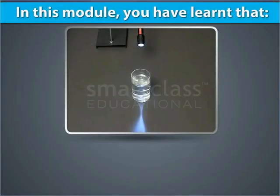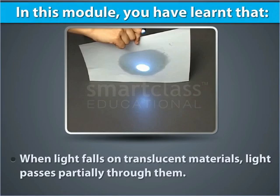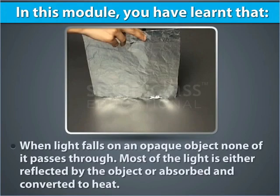In this module, you have learnt that when light strikes transparent materials, most of it passes directly through them. When light falls on translucent materials, light passes partially through them. When light falls on an opaque object, none of it passes through — most of the light is either reflected by the object or absorbed and converted to heat.